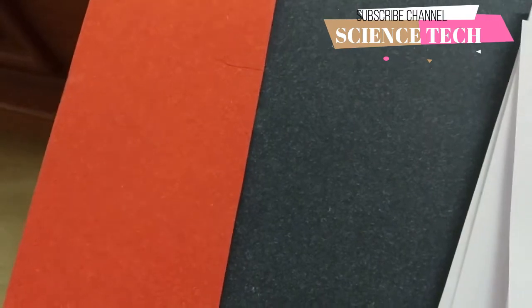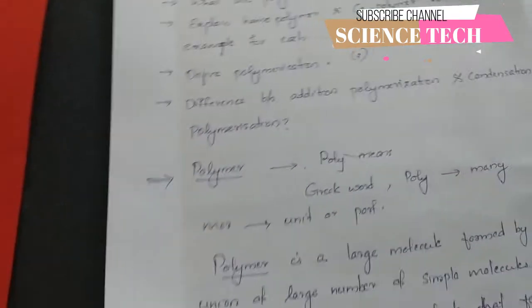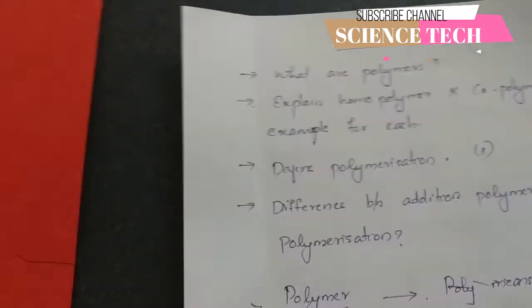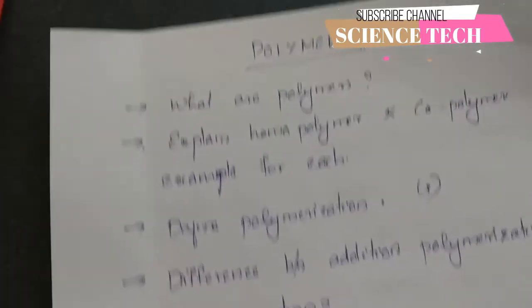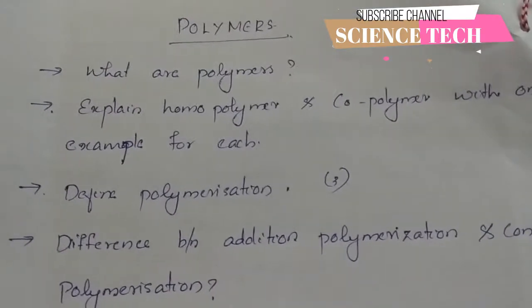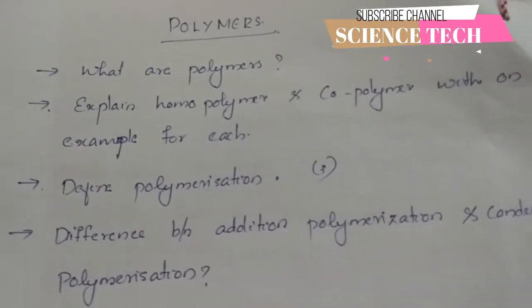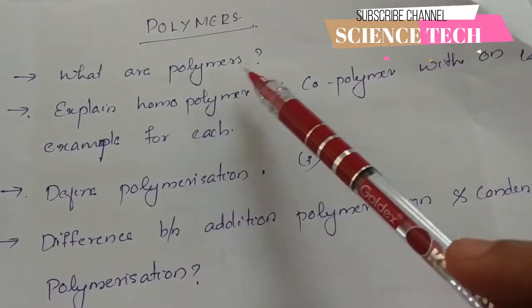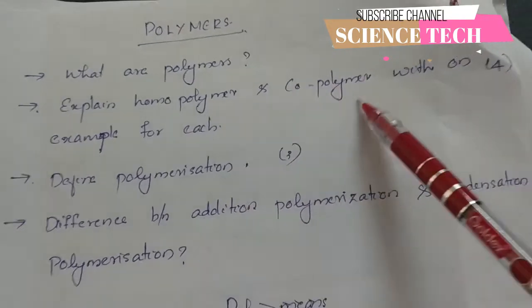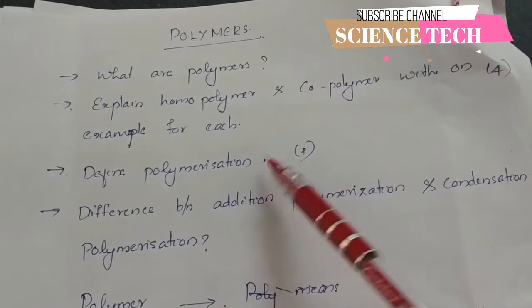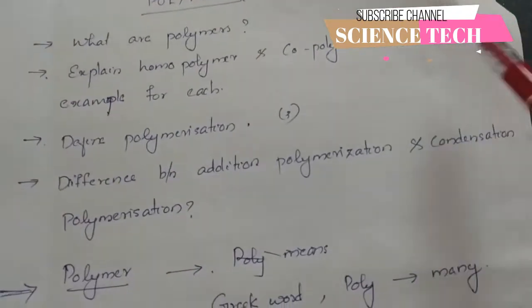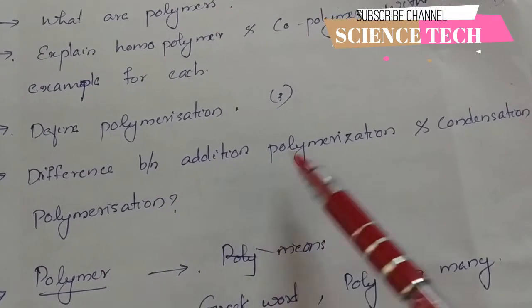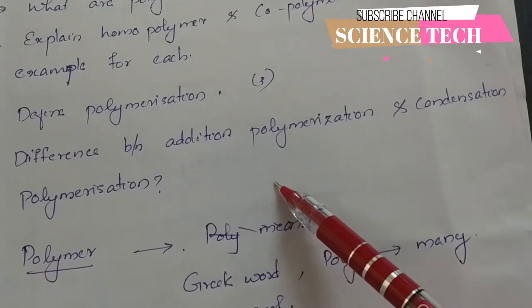Next, in this third module, we have questions on polymers. Key questions include: What are polymers? Explain homo-polymer and co-polymer with one example each. Define polymerization. And distinguish between addition polymerization and condensation polymerization.